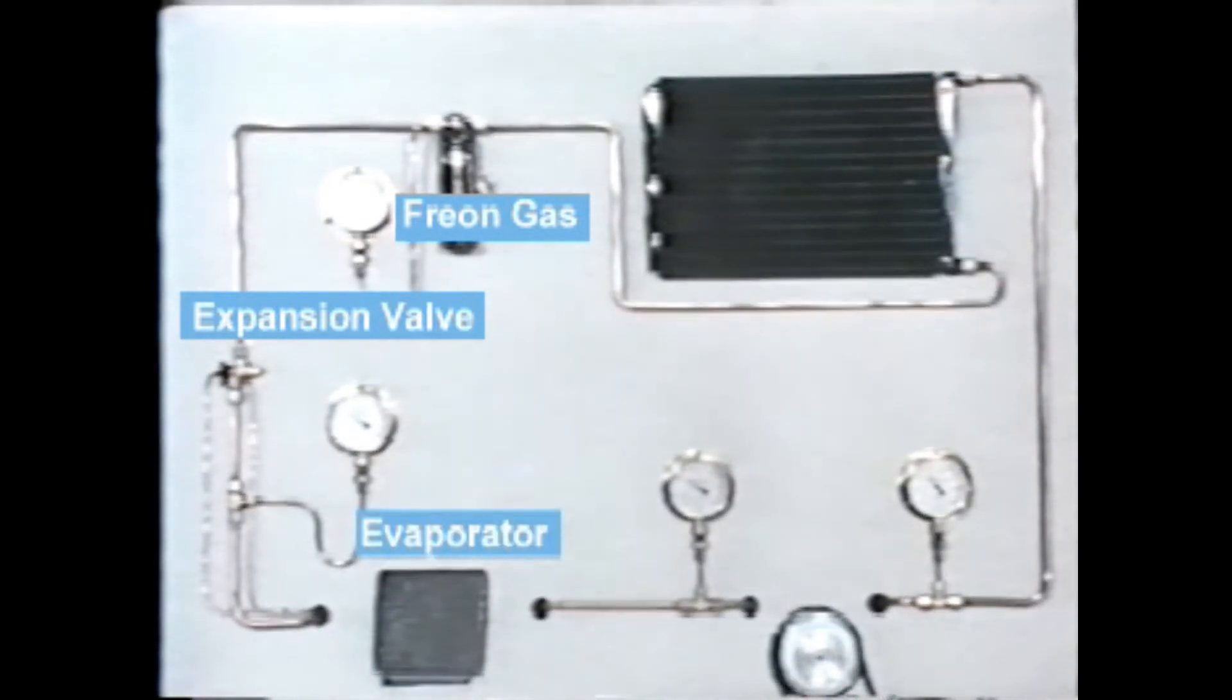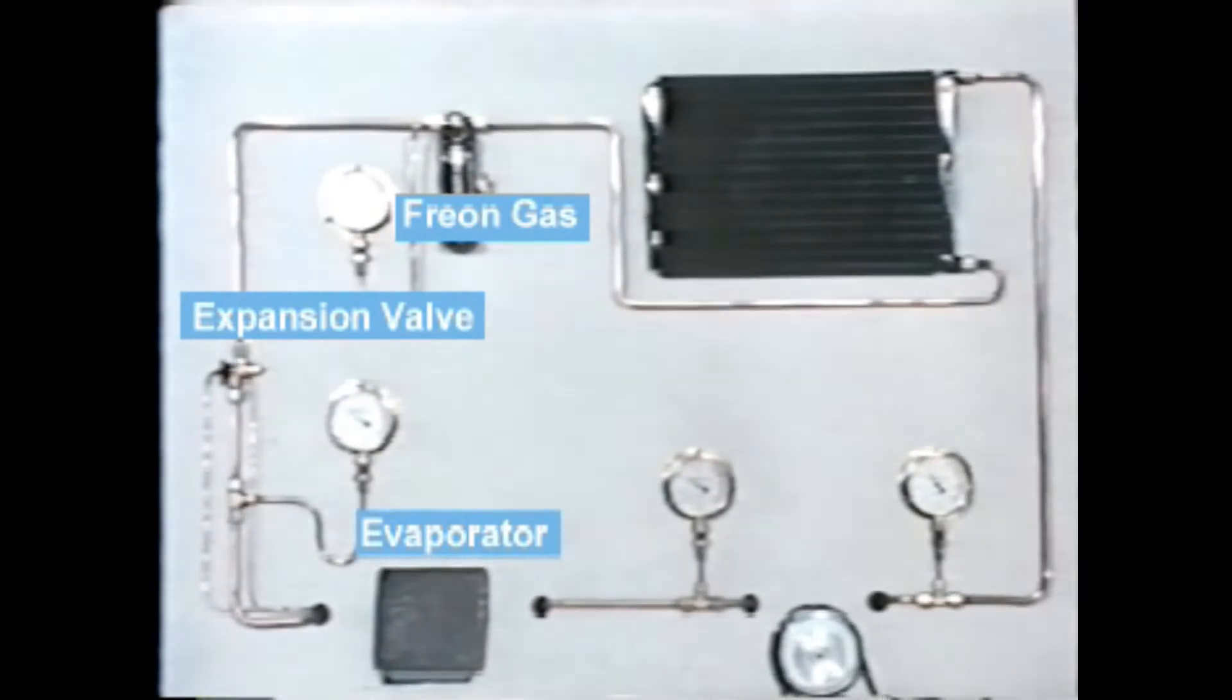Freon in the evaporator evaporates, taking heat from the surrounding object. The gasified freon is sucked into the compressor where it is compressed to become high temperature, high pressure gas.